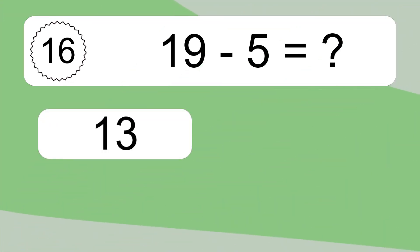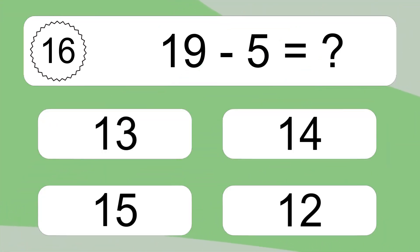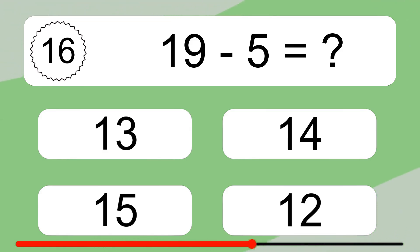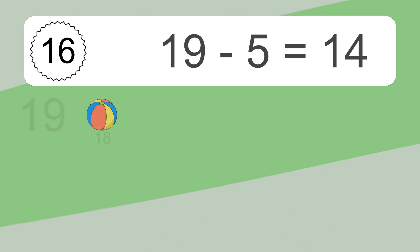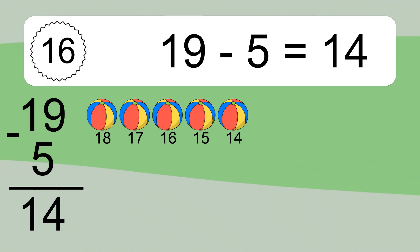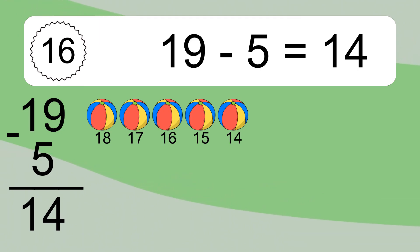19 minus 5 equals what? 19 minus 5 equals 14. Let's count it. 18, 17, 16, 15, 14.